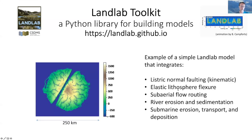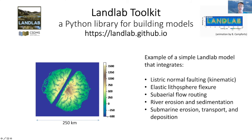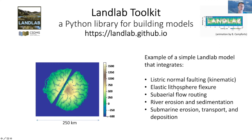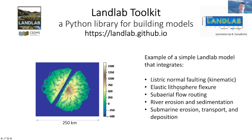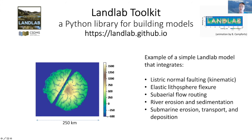I'll show you a little bit about that with the example shown here. This is an integrated simulation built as a Landlab script that creates a simulation of erosion, rifting, and sedimentation around a hypothetical island microcontinent. There is a listric normal fault running diagonally down the middle of the island, creating a seaway, all simulated through a script that brings in preexisting Landlab components — one for flexural isostasy, one for flow routing, one for fluvial erosion and sedimentation, and one for submarine sediment redistribution.